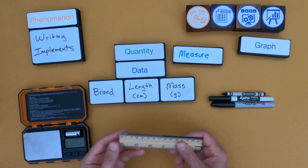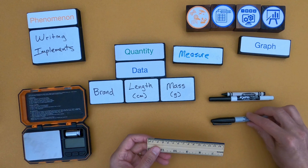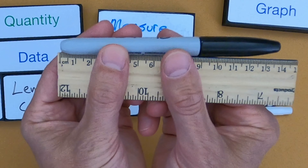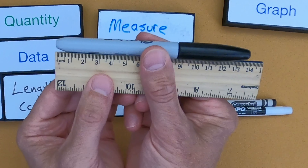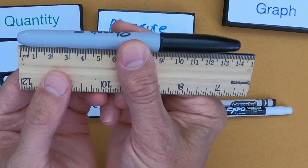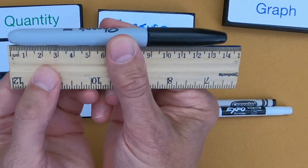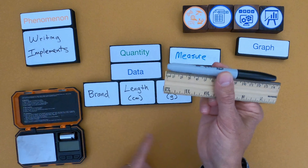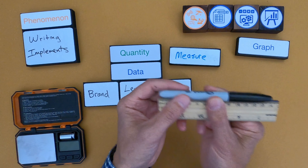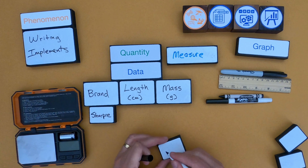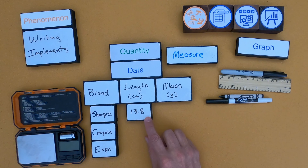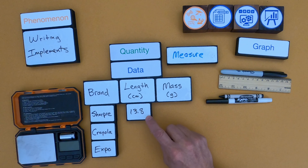To do the measuring, I have to use a tool. I'm going to start with the Sharpie. What you want to do when using a ruler is line it up on the left side and then read across on the right side. As I line it up, it's definitely closer to 14 than to 13. So I'm measuring it at 13.8 — since I put centimeters at the top, that represents 13.8 centimeters.